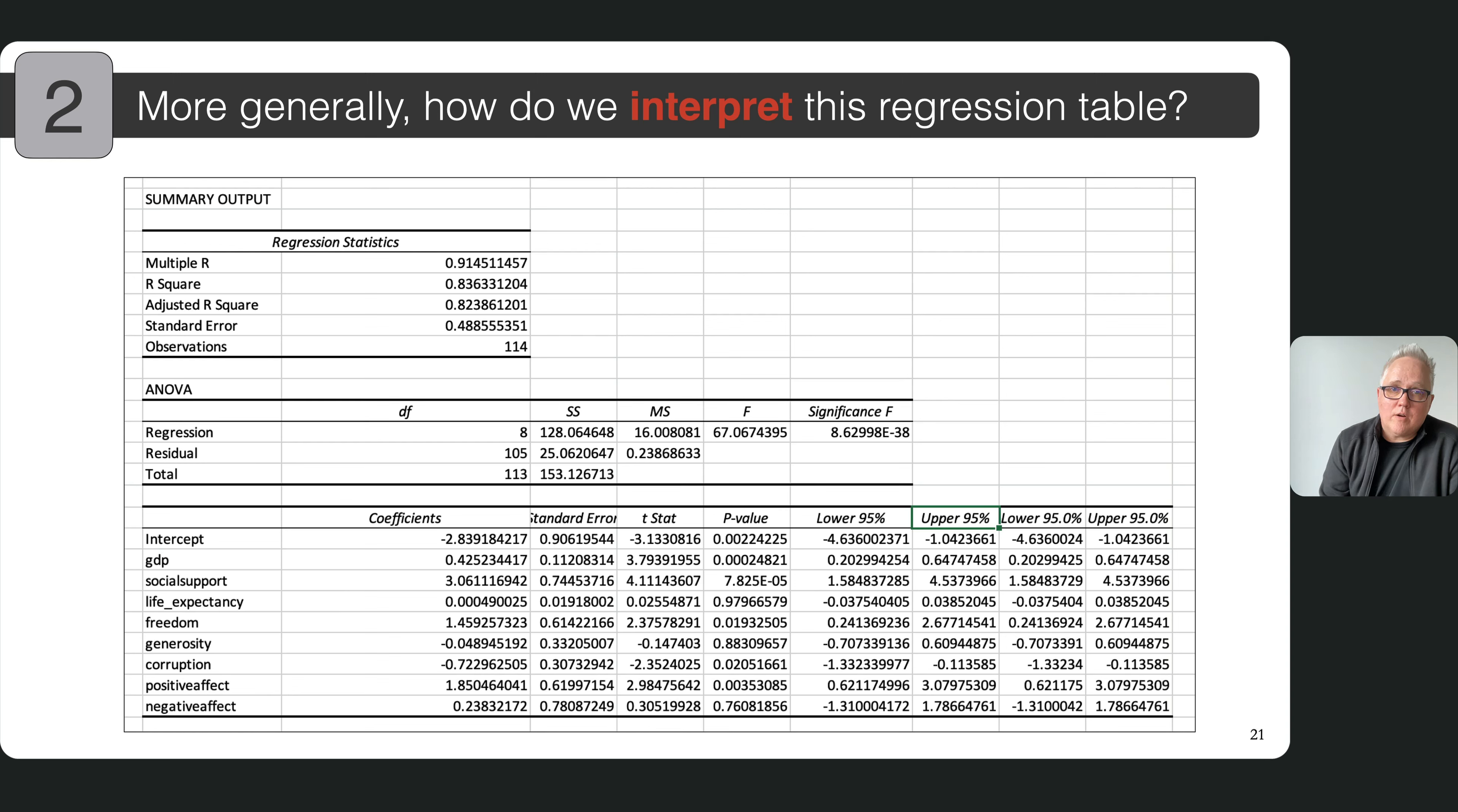Now here are multiple regression results for happiness given the analysis tool pack in Excel. And you can see the same individual estimated coefficients and their standard errors for a number of different variables. I'm not going to go through what each one of these are, and the recording for last week does that for the Excel output. But you can see here that GDP has an estimated coefficient of 0.42 with the standard error of 0.11. That gives us this T stat of 3.79, which leaves very little under the T distribution for the probability of chance, which is 0.0002.